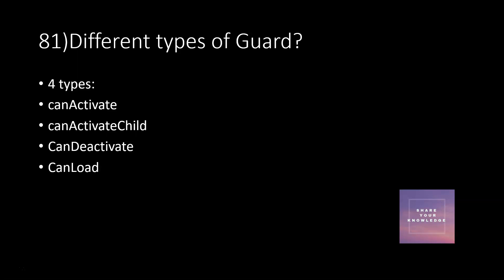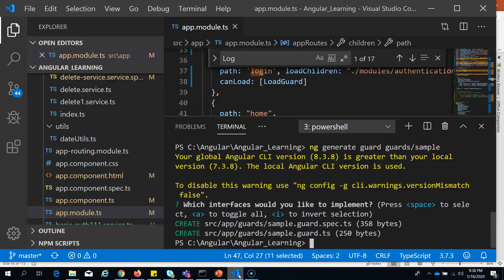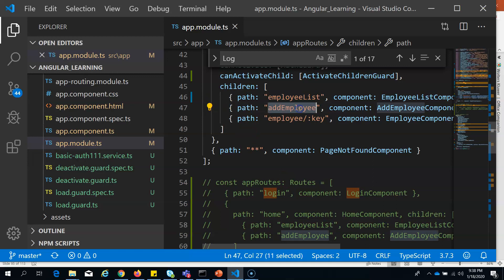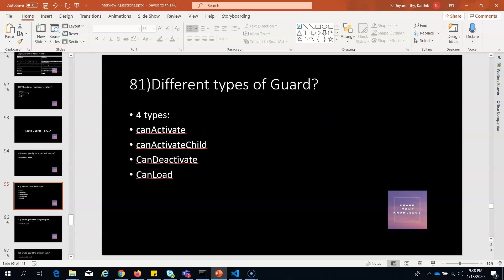The four types of guards are: canActivate, canActivateChild, canDeactivate, and canLoad. canActivate is used for anyone going to your route — it guards the complete path, like the home page. canActivateChild is for all child pages; in our case, the home route has many child routes. If you want to prevent access to those child routes, you use canActivateChild.